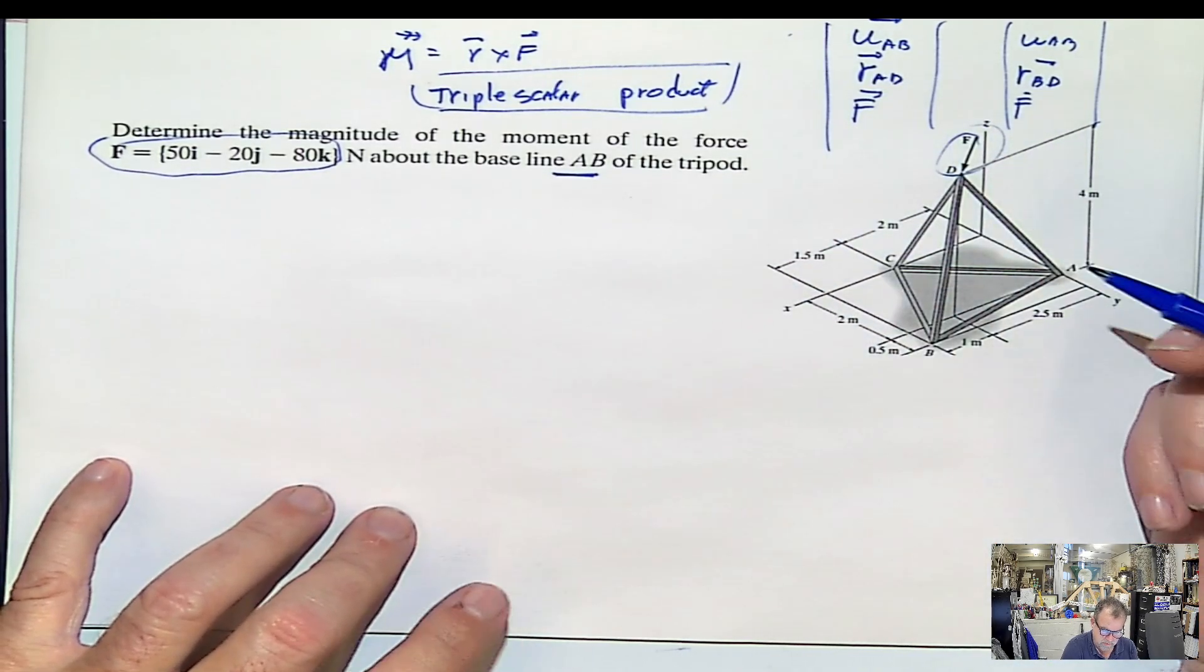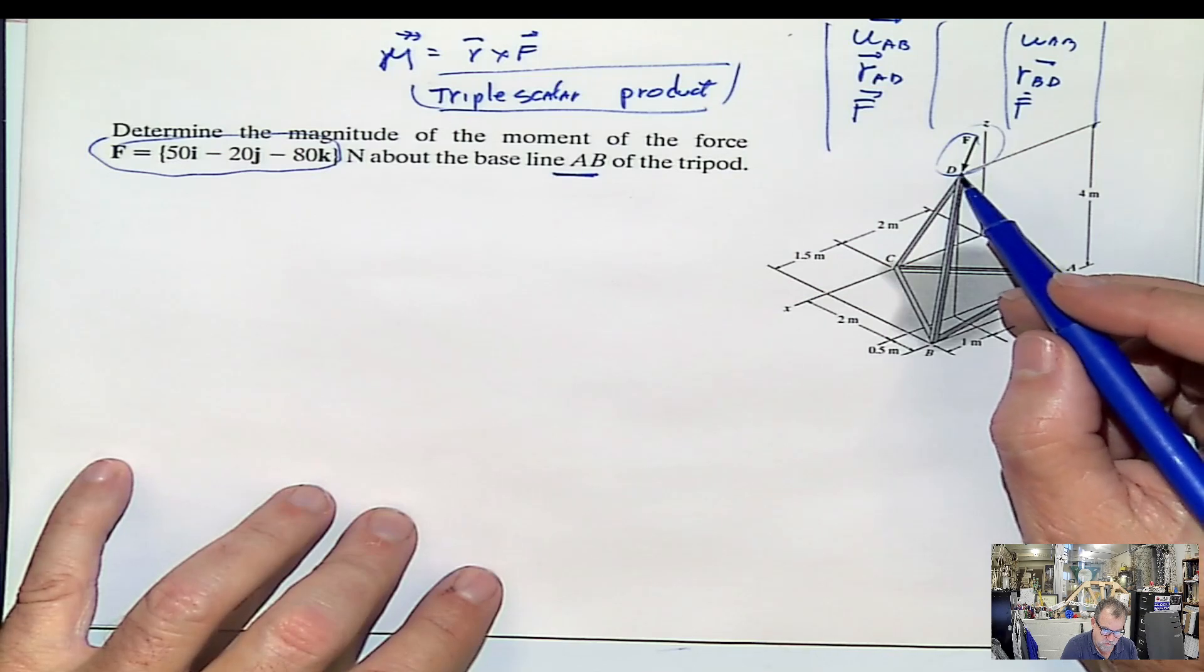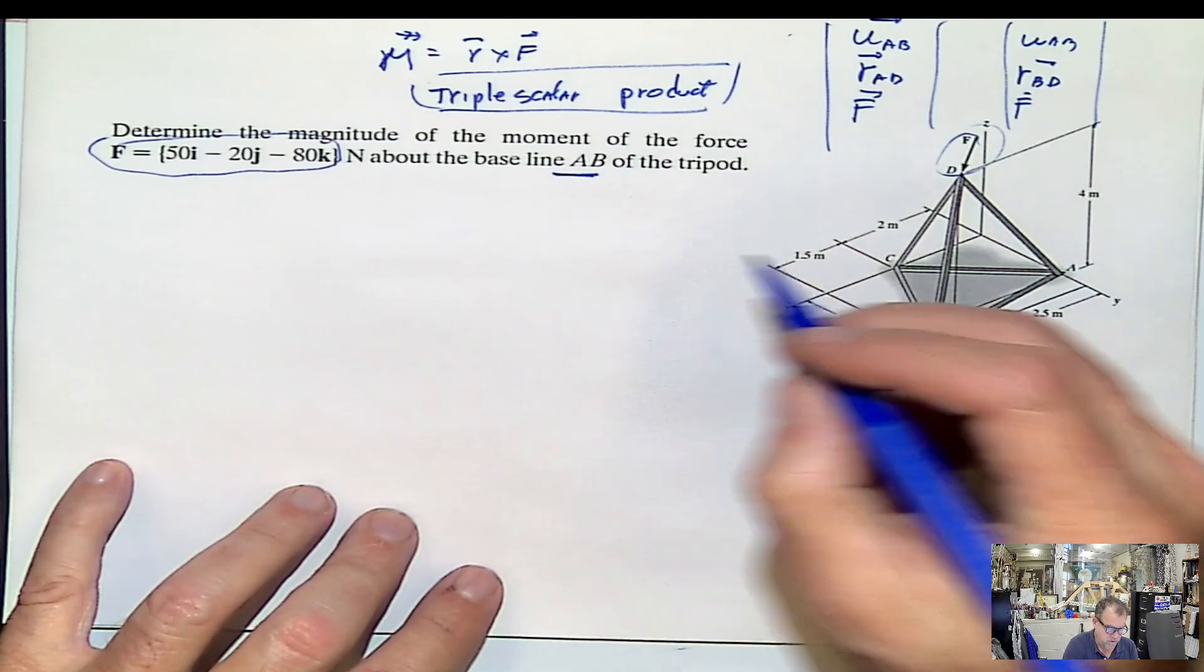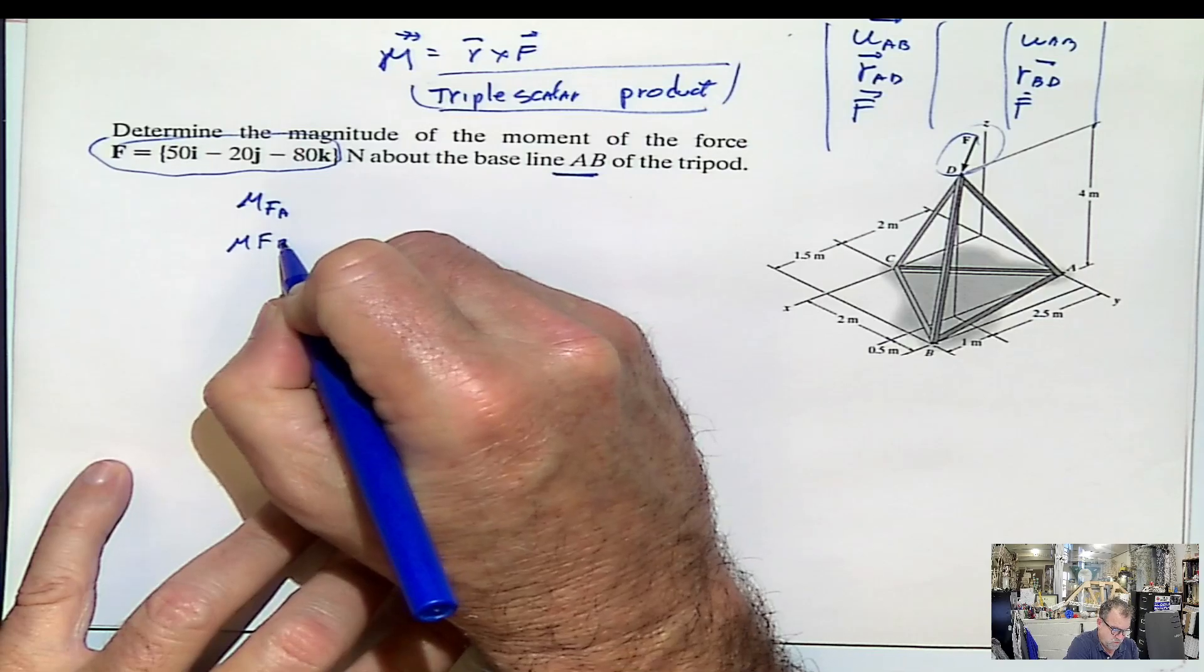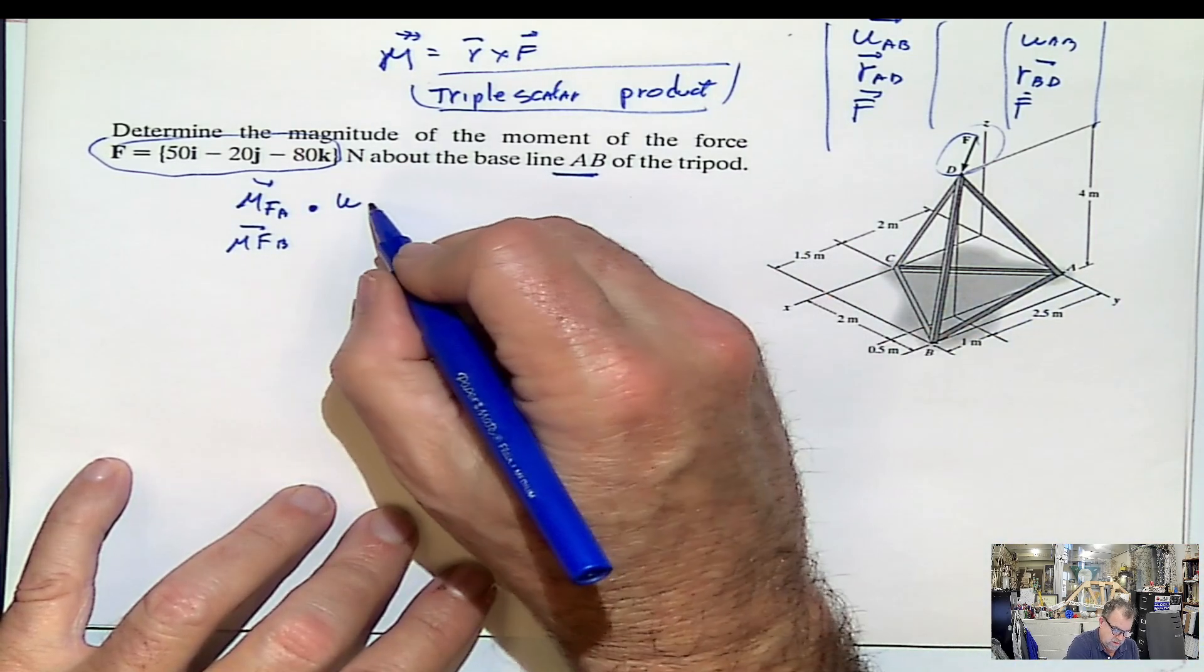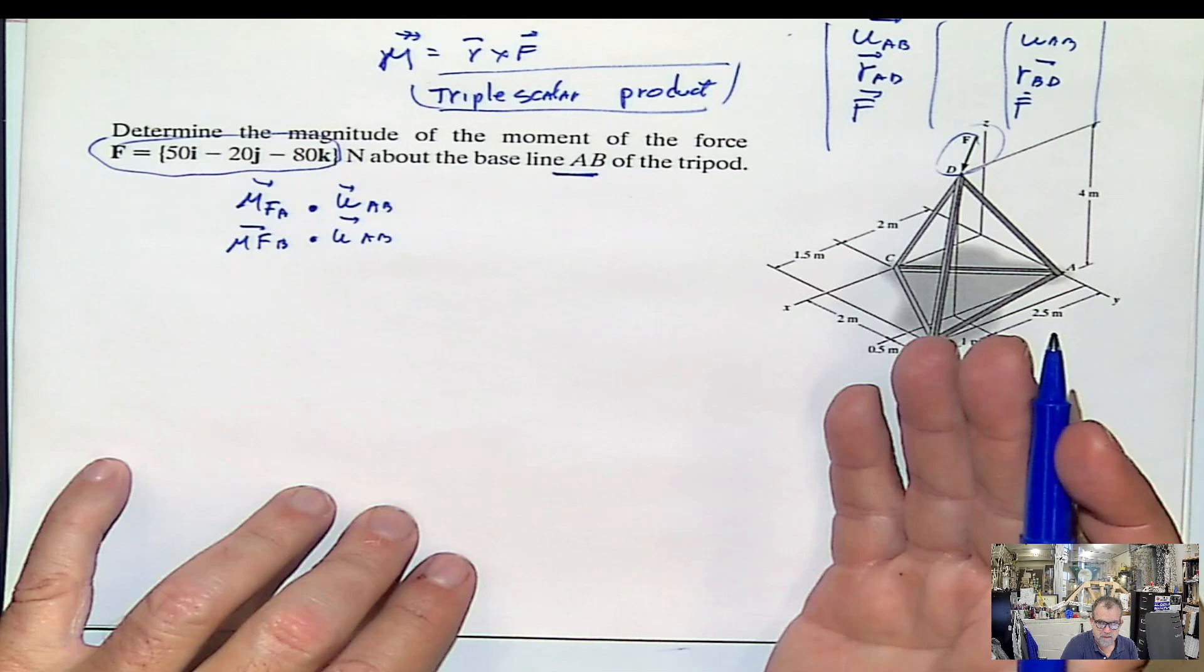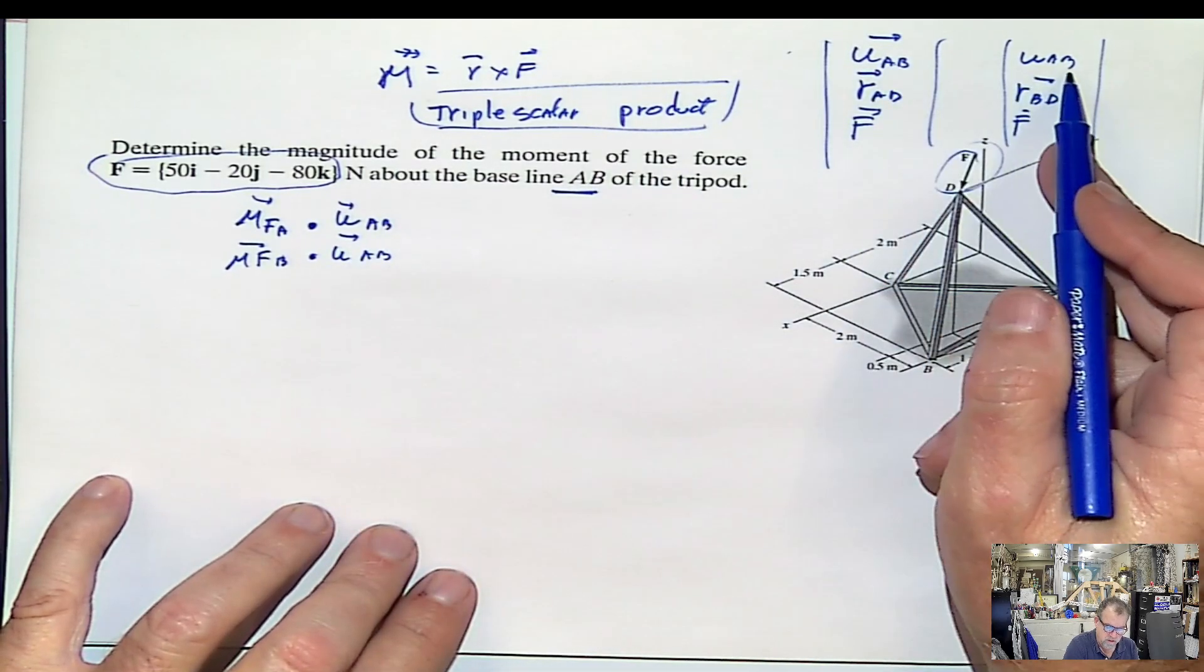Another way of doing it is by parts. So we can calculate the moment of the force with respect to any point, any point of that line, either the point A or the point B, which are the easiest one. And then we dot multiply that by the unit vector of the line AB. This is done at once, and this is just in steps, but it's the same thing. Bottom line, we need the unit vector AB. First of all, we need it here, or we need it here. It's the same.